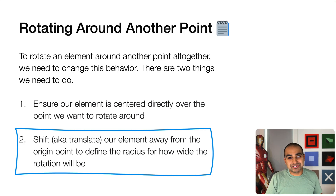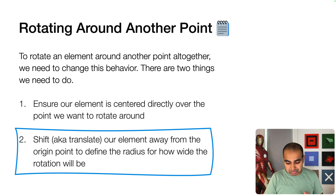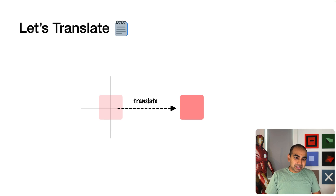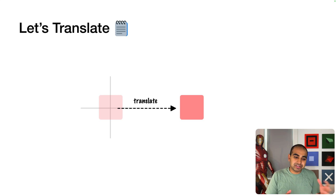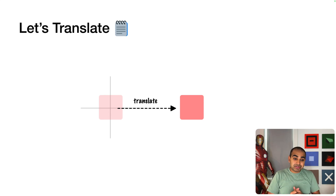What we do have full control over, and what's most critical to make it work, is point number two: shifting our element away from a transform origin to define the radius for how wide the rotation will be. Let's say we have an element centered at the transform origin, right where the X and Y points are at the center of the square-shaped div. The first thing we do is translate it — we keep the transform origin where it is, but shift the element over, say, 100-200 pixels.